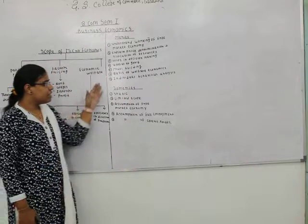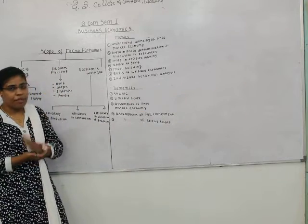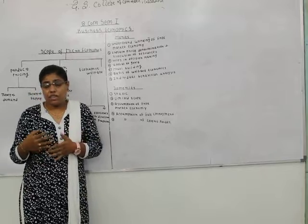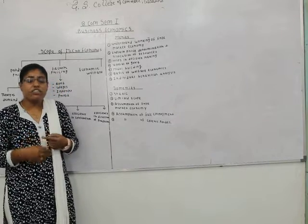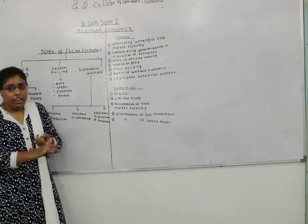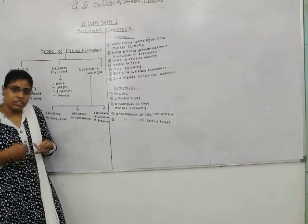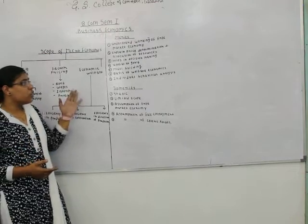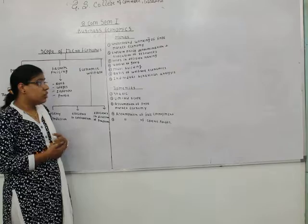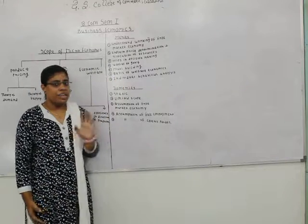The seventh and final merit is individual behavior analysis. Microeconomics deals with the individual economic agent — individual households, individual firms, individual industries. Microeconomics analyzes the behavior of such individual economic units and therefore it analyzes individual behavior.